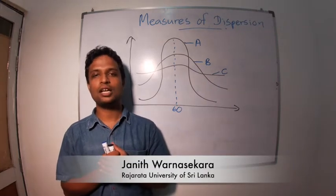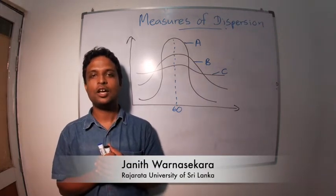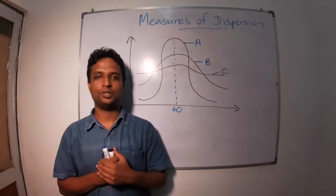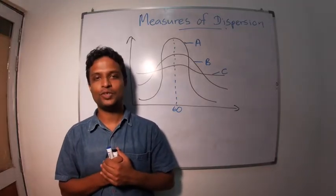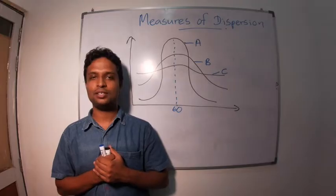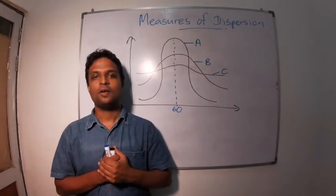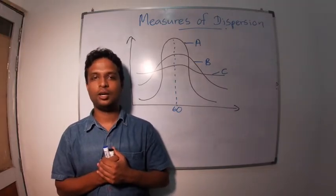Welcome to the Statistics for Non-Statisticians lecture series on Measures of Dispersion. In the previous lectures, we discussed different measures of central tendency: mean, arithmetic mean and harmonic mean.